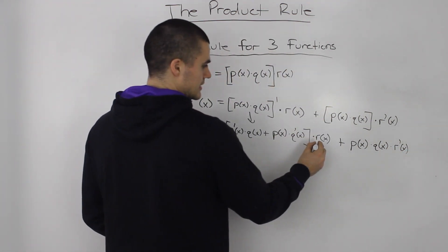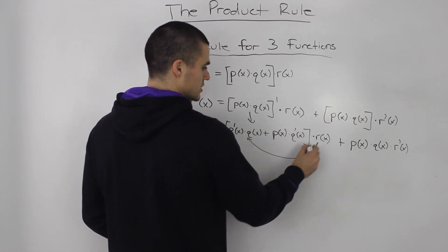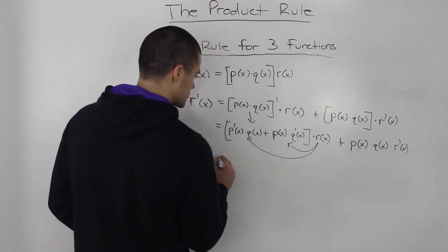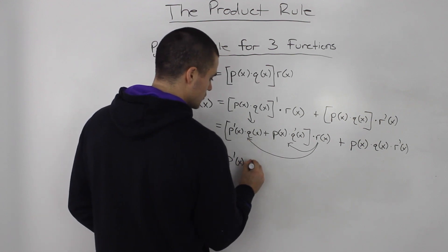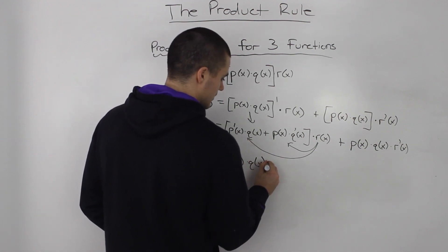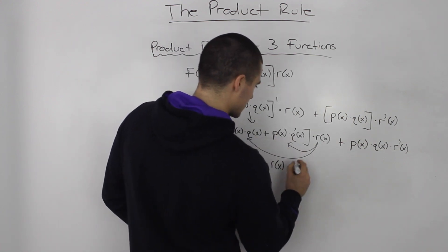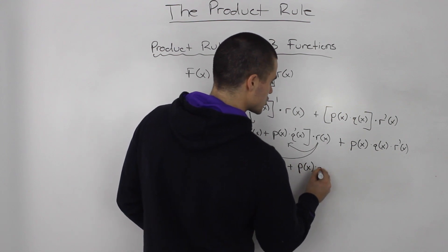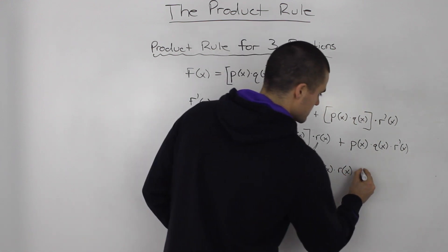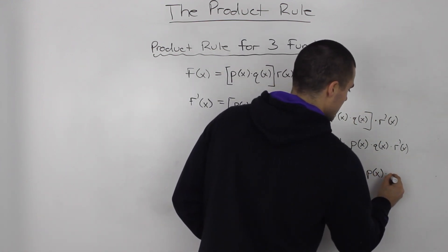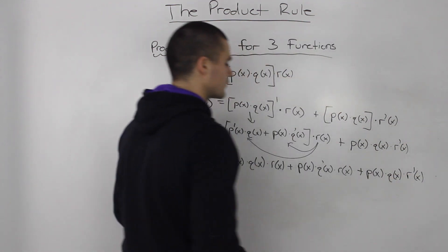And now, for this function, let's distribute this r(x) inside the bracket into this expression and into this expression. So our final answer will just be p prime of x times q(x) times r(x), plus p of x times q prime of x times r(x), plus p of x times q of x times r prime of x.